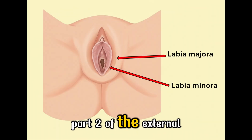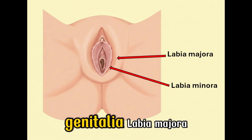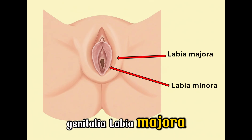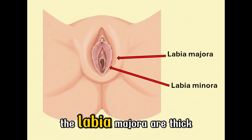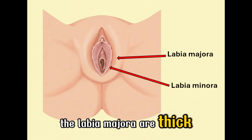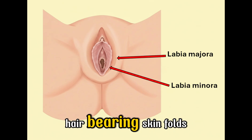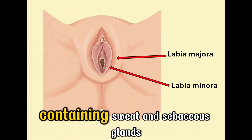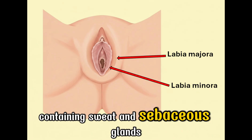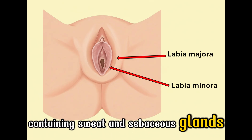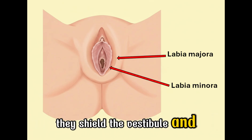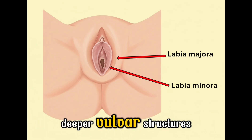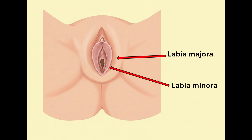Part 2 of the external genitalia: labia majora. The labia majora are thick, hair-bearing skinfolds containing sweat and sebaceous glands. They shield the vestibule and deeper vulvar structures.